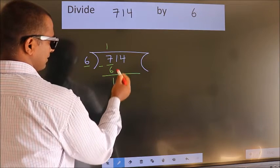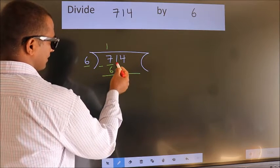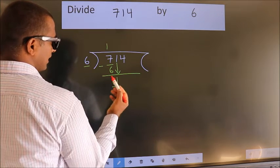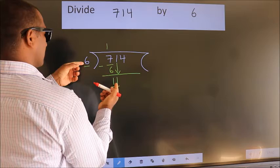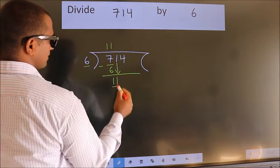After this, bring down the beside number. So 1 down. So 11. A number close to 11 in 6 table is 6 once 6.